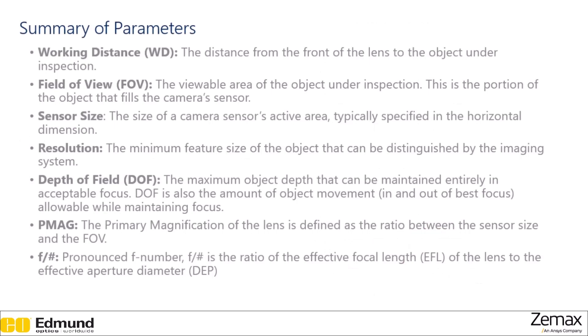So in summary, we have these seven parameters, the working distance, field of view, sensor size, resolution, depth of field, primary magnification, and F number. And hopefully you have an idea of what all of these mean and how some of them are qualitatively related to each other. We'll be going in more depth into various parameters later in the course. This has been a high level review of system parameters. Thank you for watching.